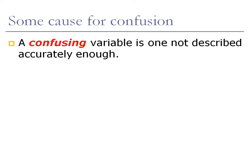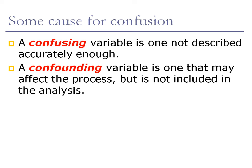However, there is another kind of variable that you want to keep in the back of your mind at all times when you're reading a research article, and it's the kind of variable that is called confounding. A confounding variable is one that may affect the process but is not included in the analysis.